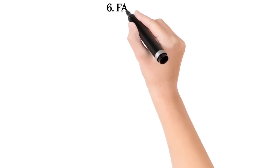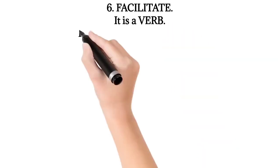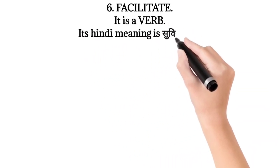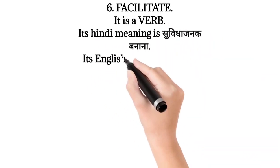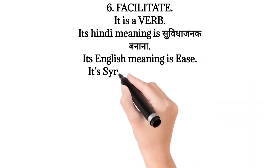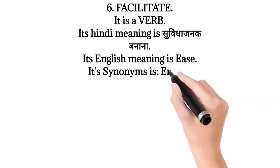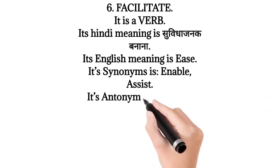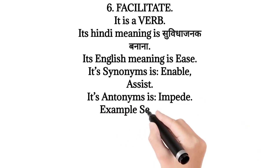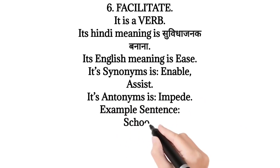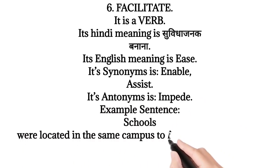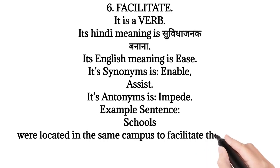6. Facilitate — it is a verb. Its Hindi meaning is 'suvidhajanak banana'. Its English meaning is 'ease'. Its synonyms are enable, assist. Its antonym is impede. Example sentence: Schools were located in the same campus to facilitate the sharing of resources.